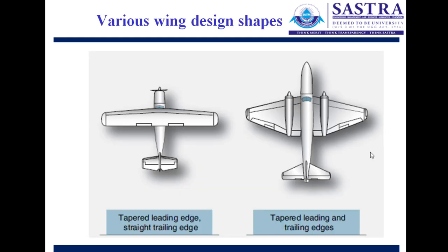Looking at various wing design shapes, the first picture shows a tapered leading edge — the leading edge is tapered, not straight — with a straight trailing edge. Another wing design has both the trailing edge and leading edge tapered, which is known as tapered leading and trailing edges.